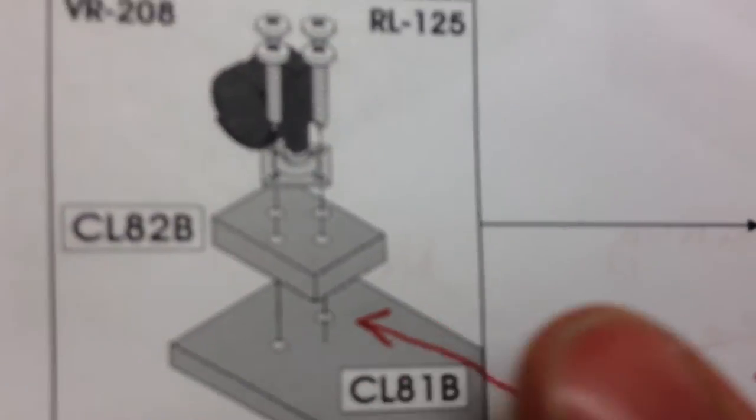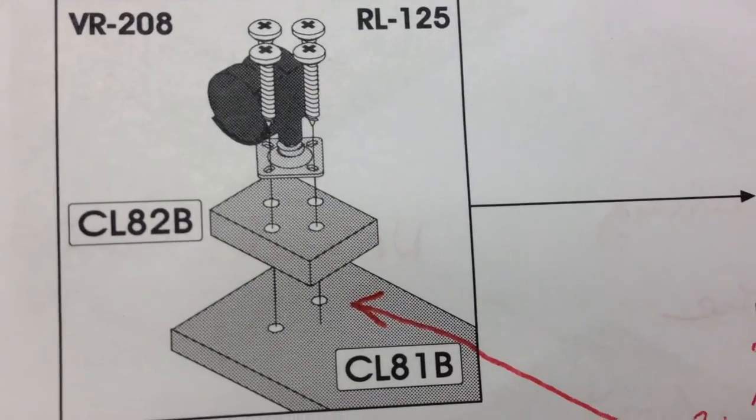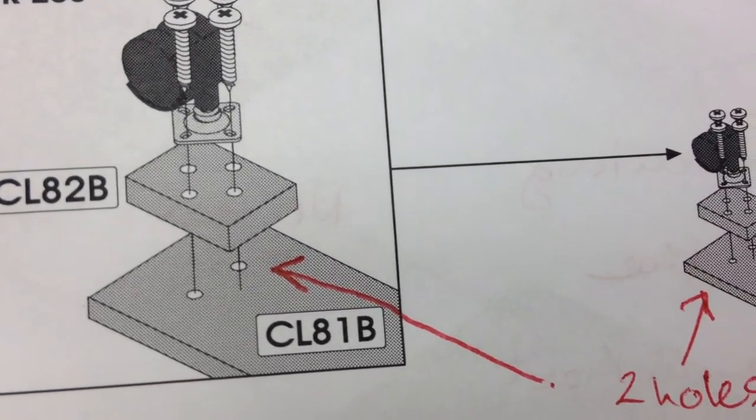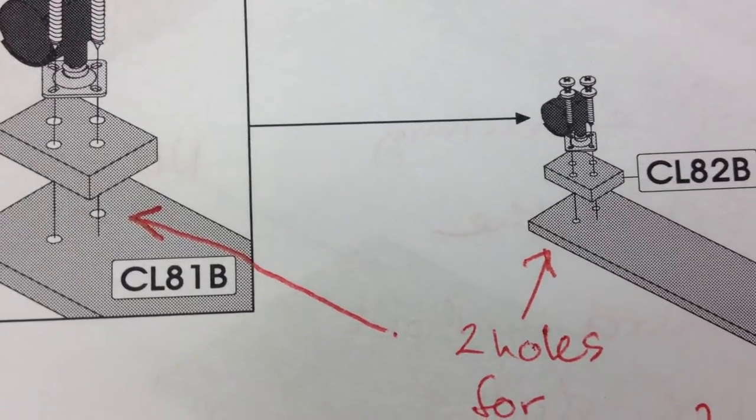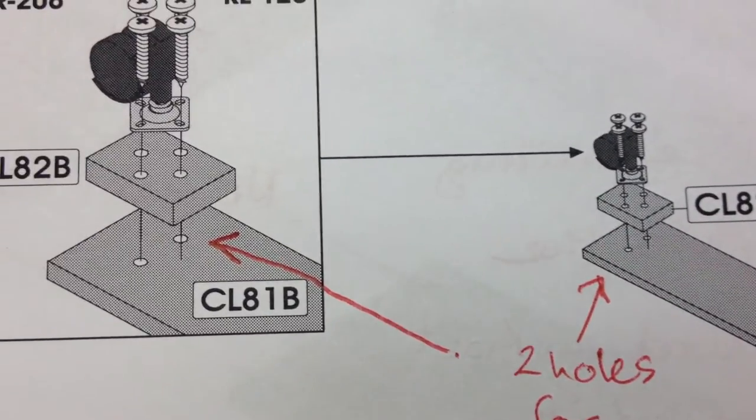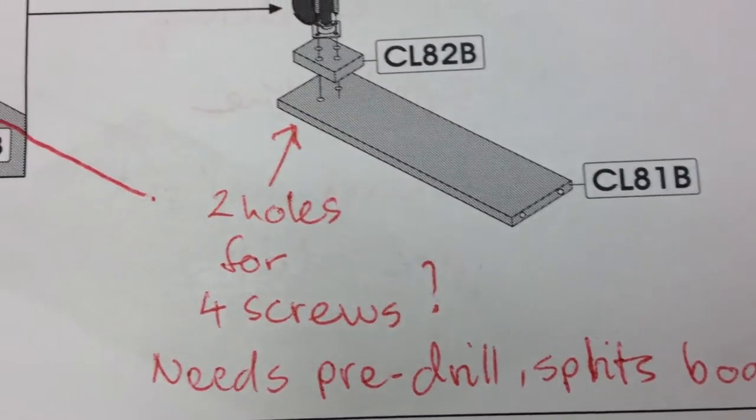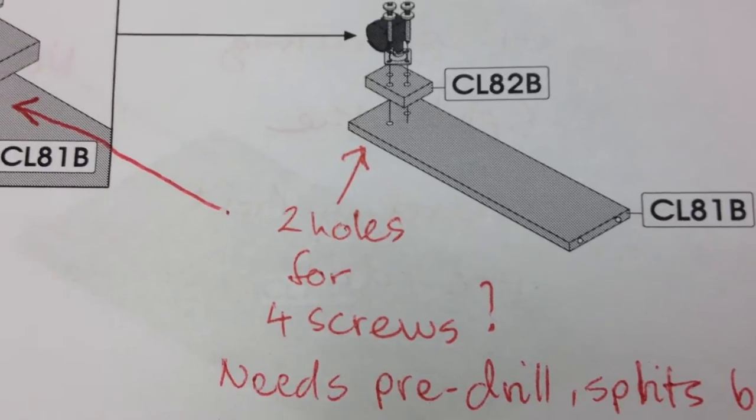There is a caster wheel and some kind of support that goes on the underside of the door. Like so, in that position there, you kind of get the image. For four screws, you only have two holes in part CL-81B. The other two screws don't go in because they just don't go in without pre-drilling. Don't even try. It just splits the board. The board is so narrow and so thin, it's just going to split it and flake it apart.